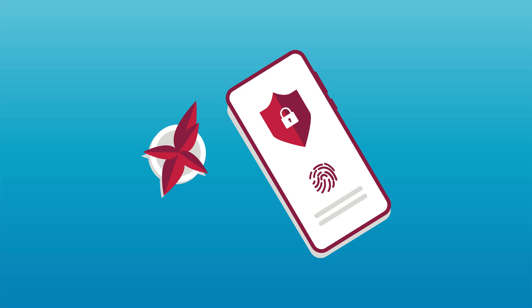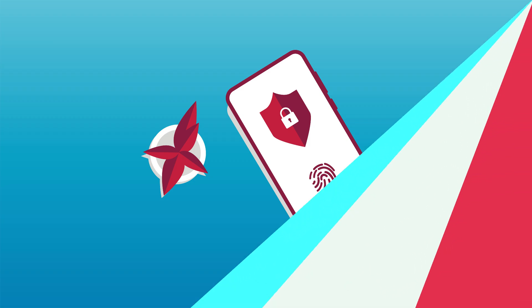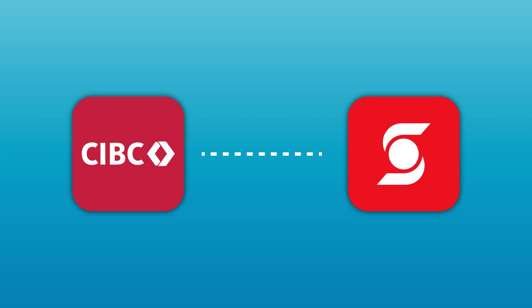After you have reviewed everything — recipient info, amount, and account details — confirm the transfer and your money will be on its way in just a few minutes. It's that simple. So that's how you can quickly transfer money from CIBC to Scotiabank using Interac e-transfer.